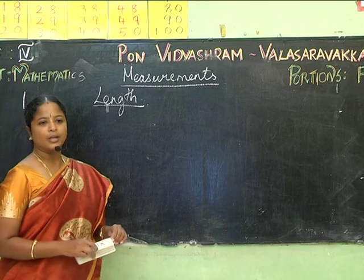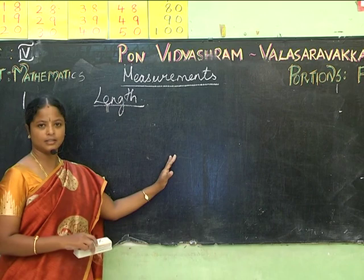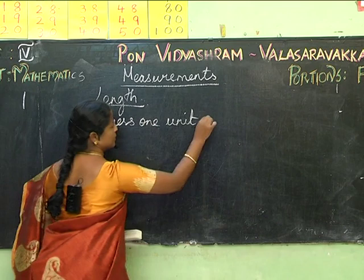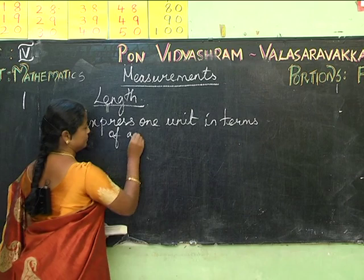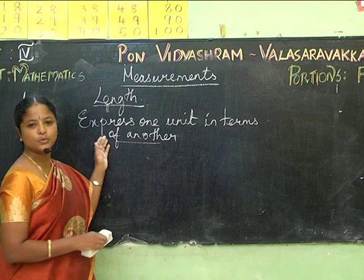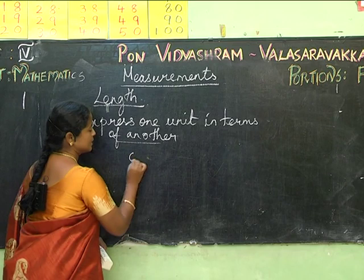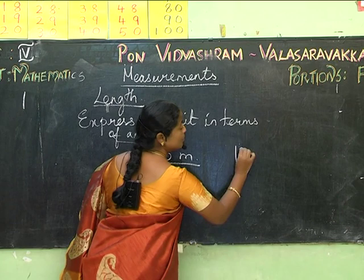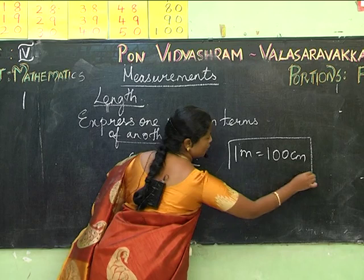Now, how will you convert from one unit to another, or express one unit in terms of another? First, we shall look at centimeters to meters. One meter is equal to 100 centimeters.